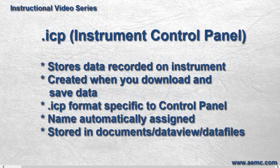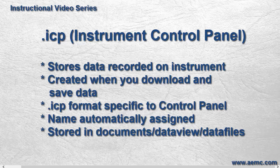ICP files, also called Instrument Control Panel files, contain the raw data downloaded from the instrument. These files are created when you open the DataView Control Panel and save downloaded data to the PC. Note that each DataView Control Panel has its own ICP file format. DataView assigns names to these files as they are created, based on data such as the name of the file as stored on the instrument, the name of the Control Panel creating the file, and other factors. By default, ICP files are stored in the Data Files subfolder in the DataView folder.